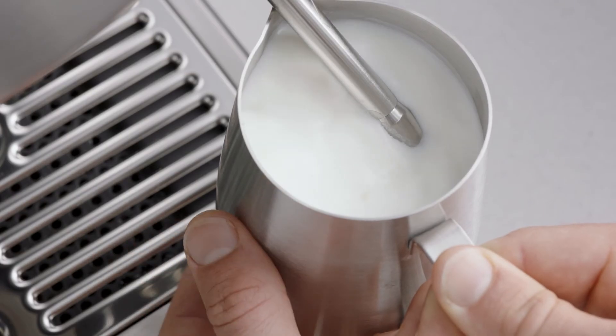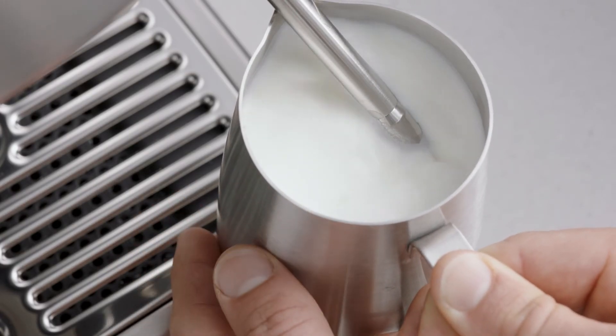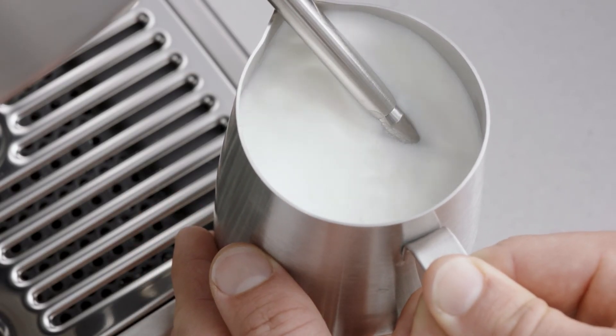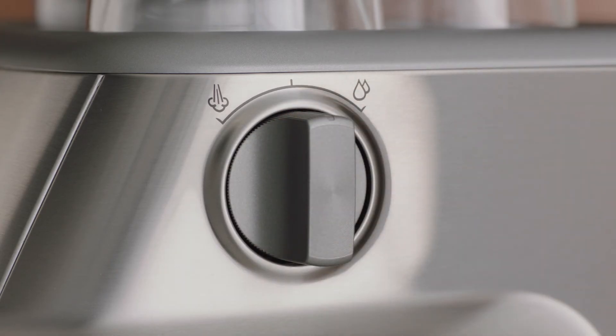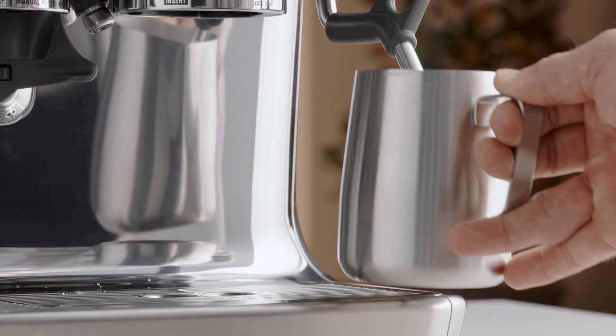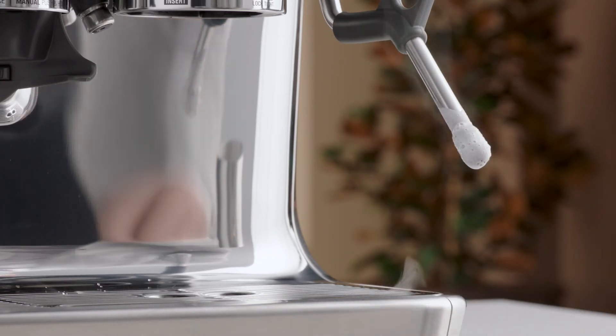The milk is at the correct temperature, 60 to 65 degrees Celsius, when the jug is hot to touch. Once the desired temperature is reached, move the steam dial to the vertical position before taking the wand tip out of the milk.